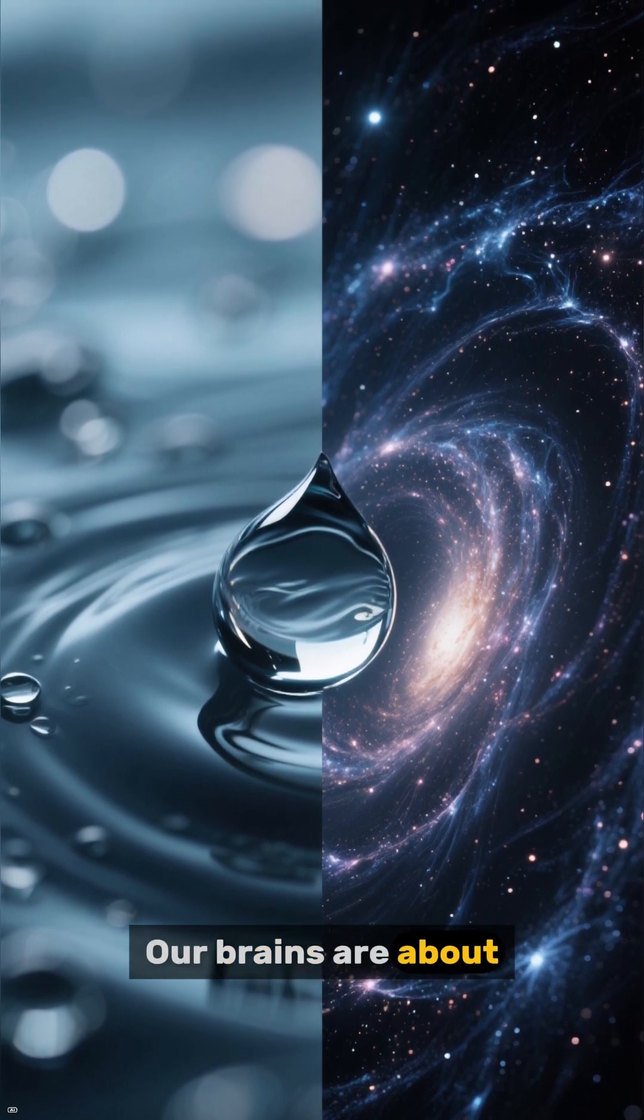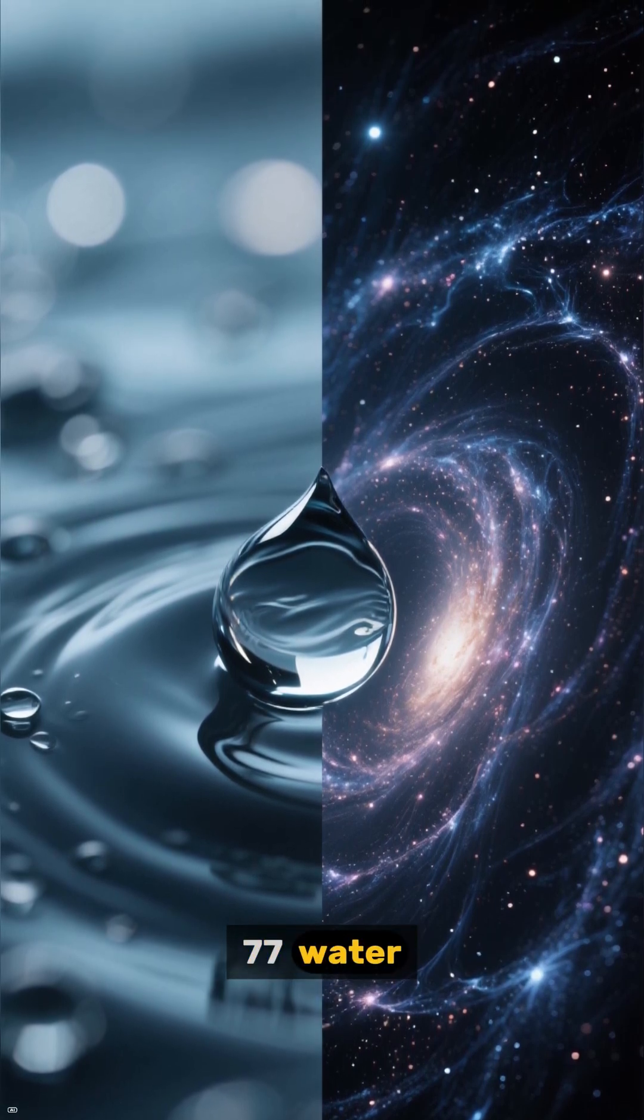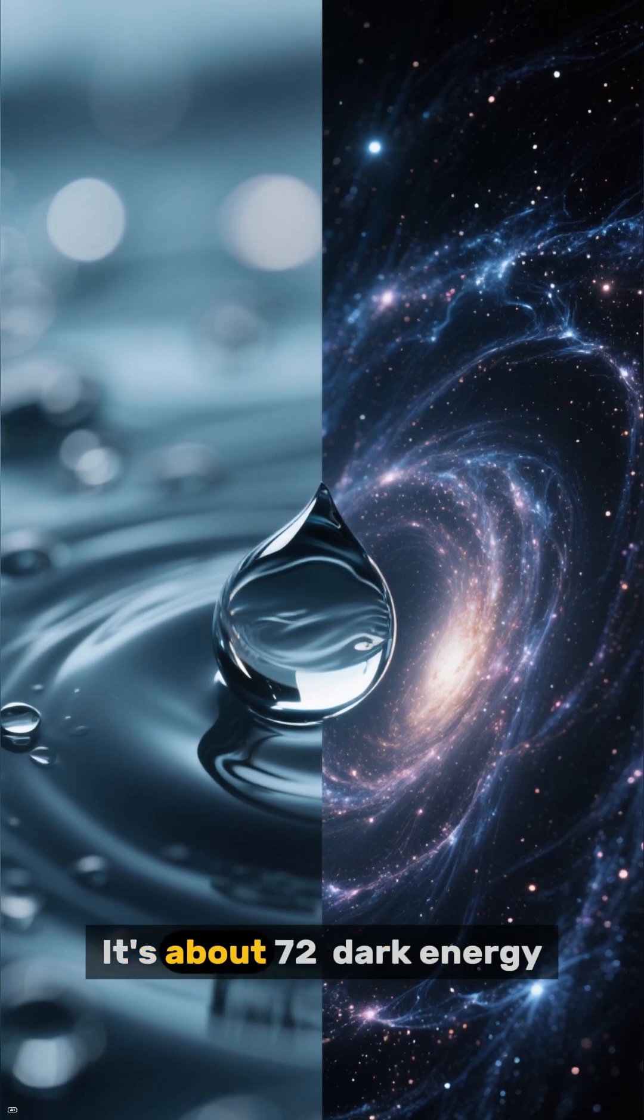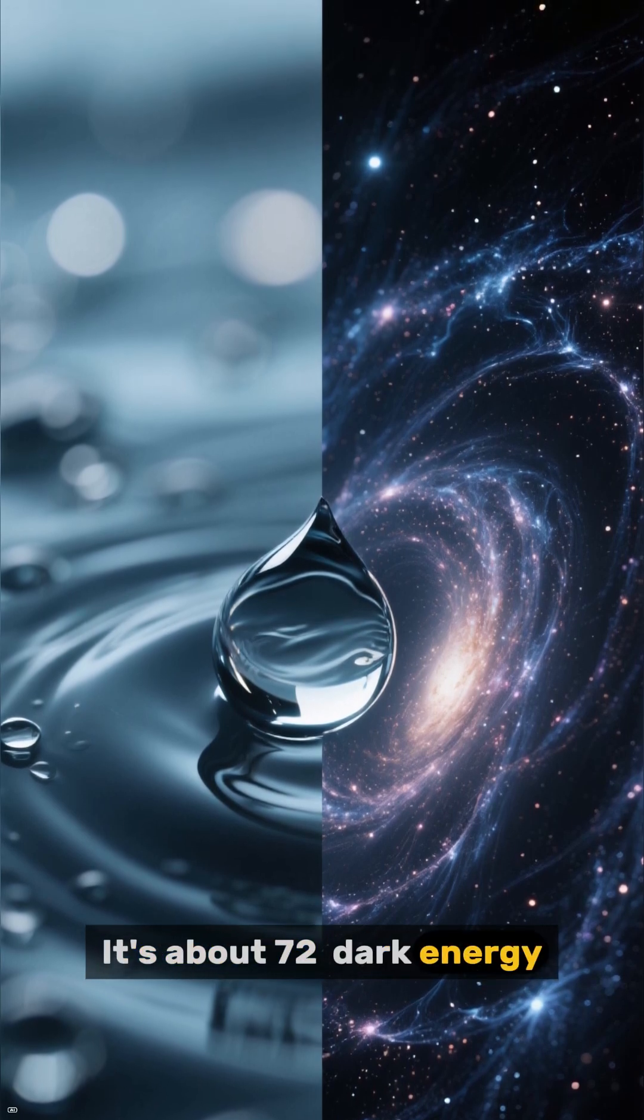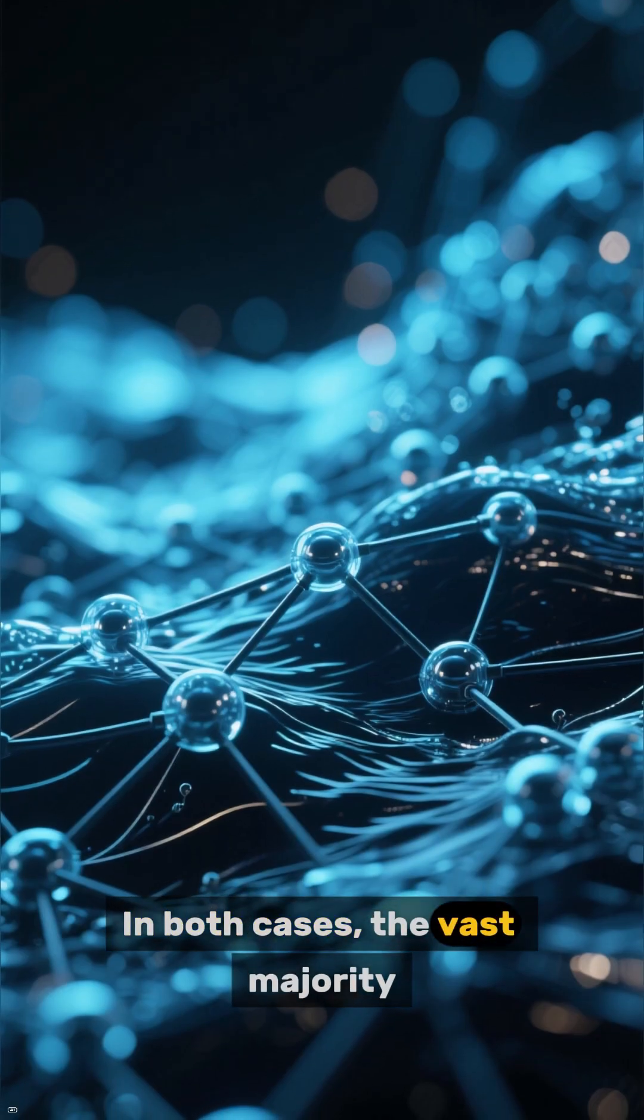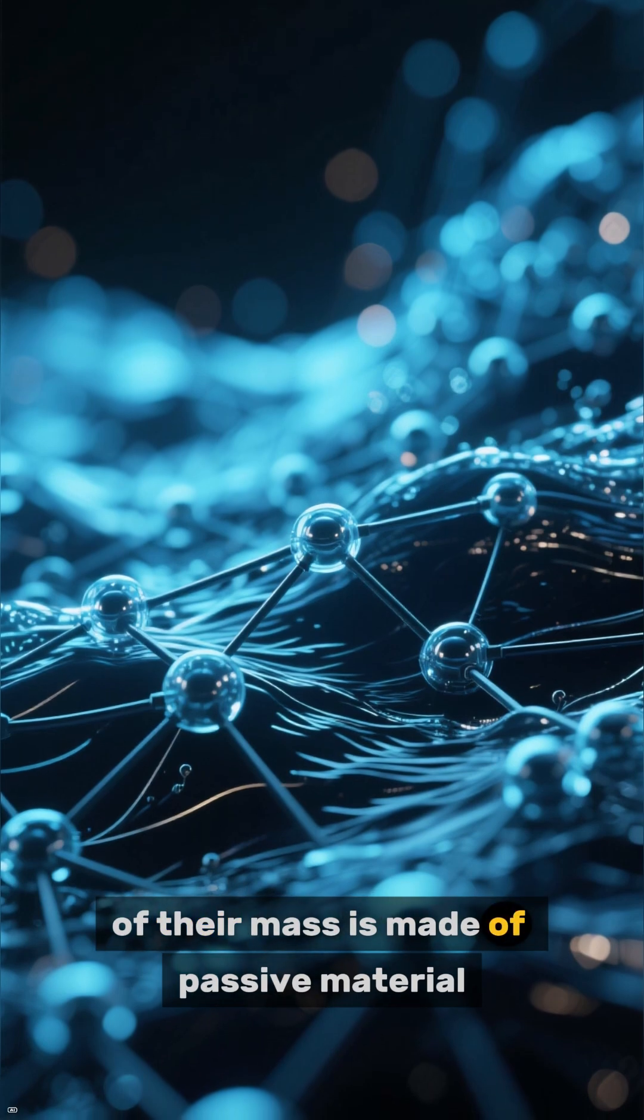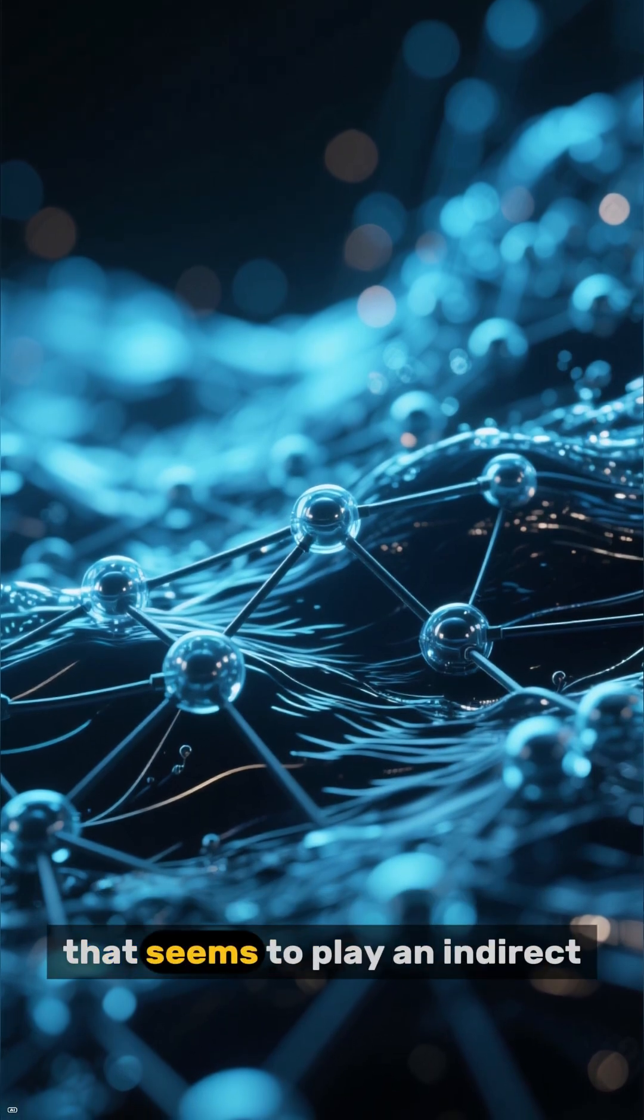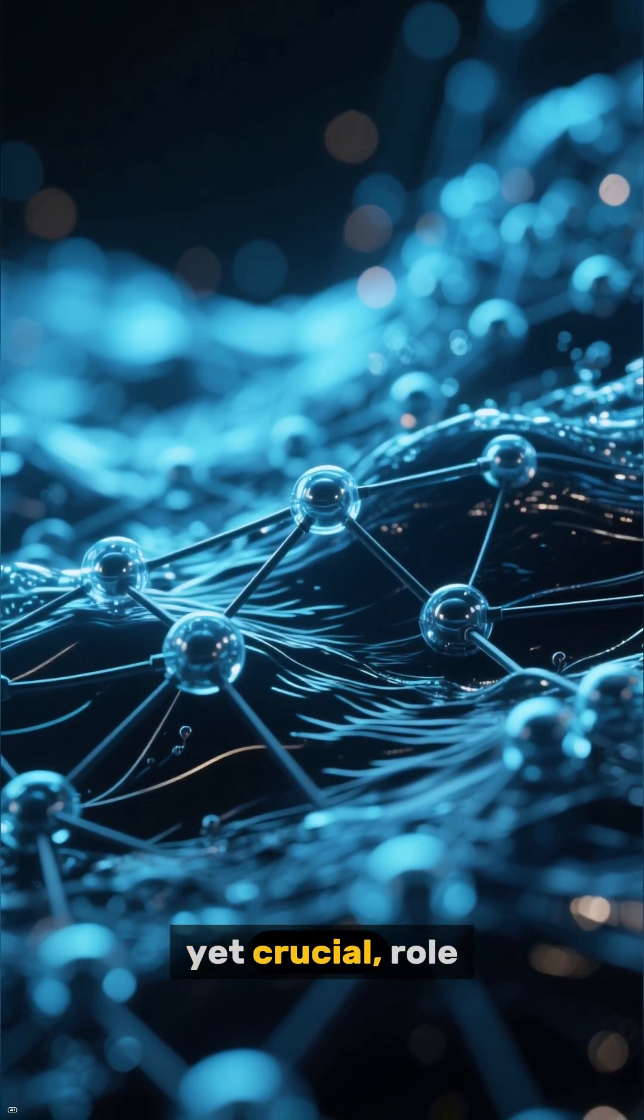But the real magic happens when we look at their composition. Our brains are about 77% water, and the universe, it's about 72% dark energy. In both cases, the vast majority of their mass is made of passive material that seems to play an indirect, yet crucial, role.